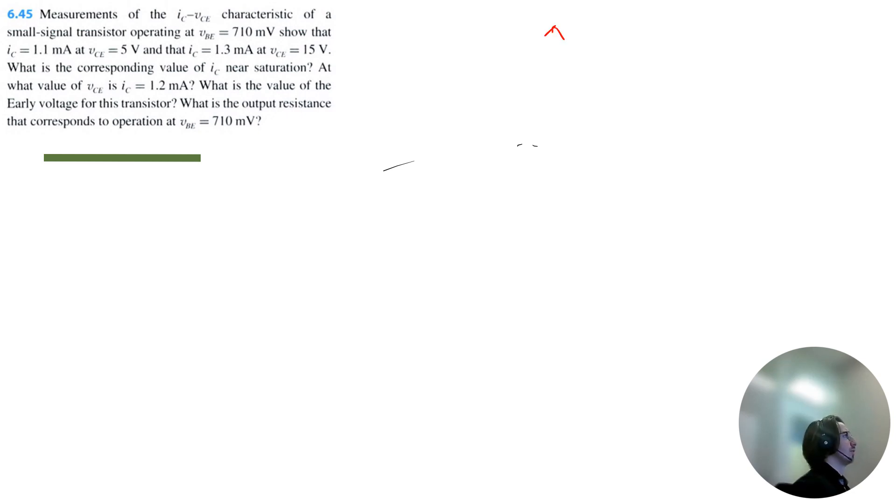So first let's draw what's being described here. We have VCE on the x-axis in volts and IC on the y-axis in milliamps. We have 5 volts corresponds to 1.1 milliamps, and then 15 volts corresponds to 1.3.